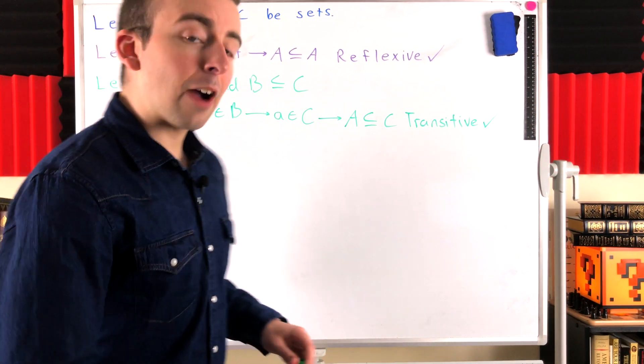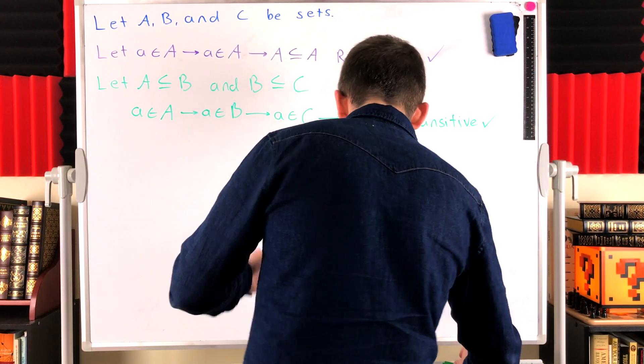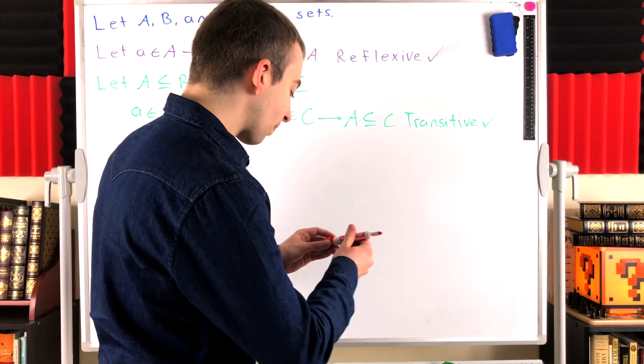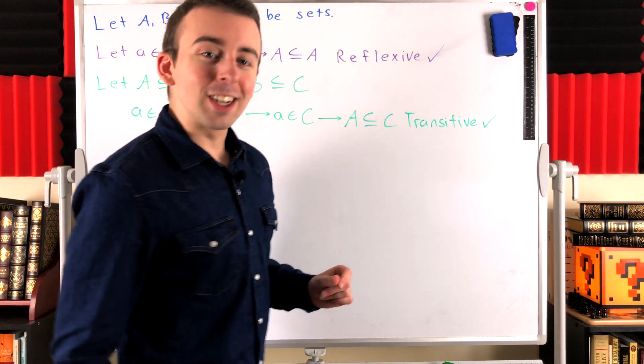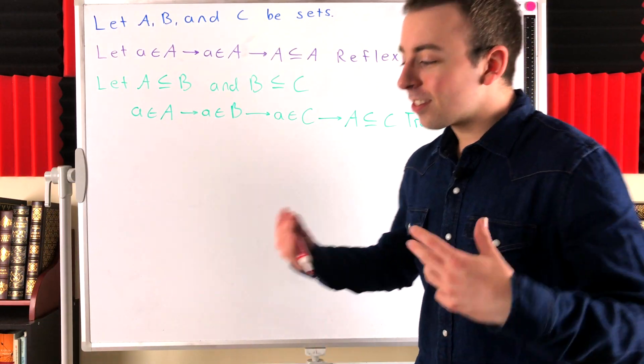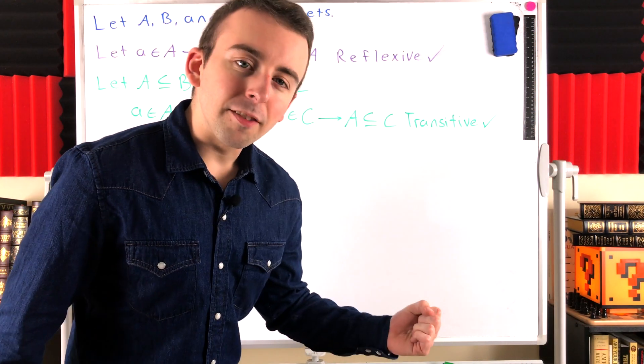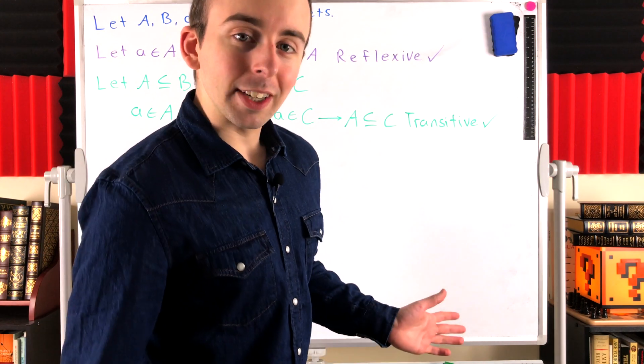Now, for the last one, how about the symmetric property? If the subset relation is symmetric and we can prove it, then we will have shown that it is an equivalence relation. As you might suspect, this is where it breaks. The subset relation is not symmetric. For the subset relation to be symmetric, that would mean if A is a subset of B, B has to be a subset of A. That's what it would mean, and that's certainly not true.